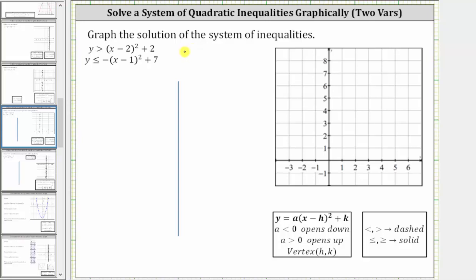We are asked to graph the solution to the system of quadratic inequalities. To determine the solution, we solve each inequality separately, and then because we have two inequalities, the solution to the system will be the double shaded region.